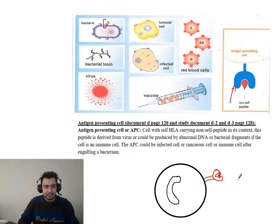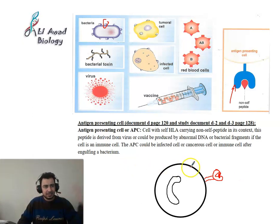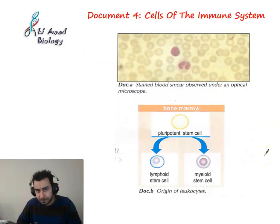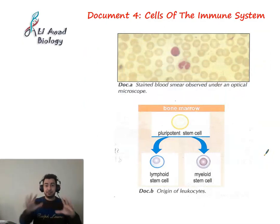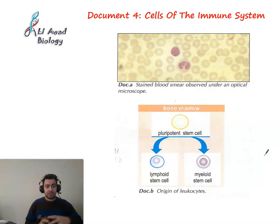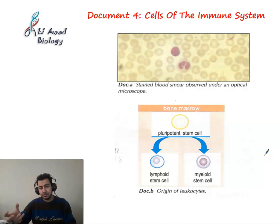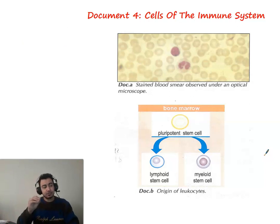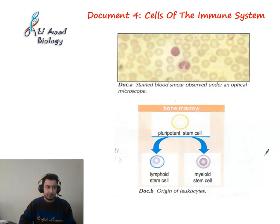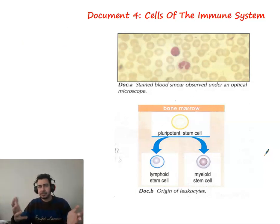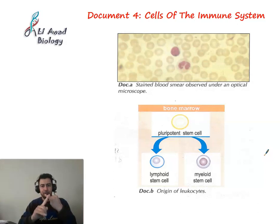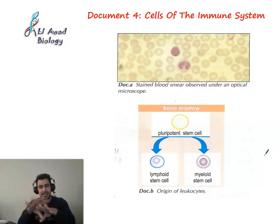That's everything related to non-self. Now we are going to start with the cells of the immune system. This document is very important because when you understand the different types of cells of the immune system, you can solve any question later and understand the mechanism of the immune system. Like any system, it is made up of organs, tissues, cells, and molecules.